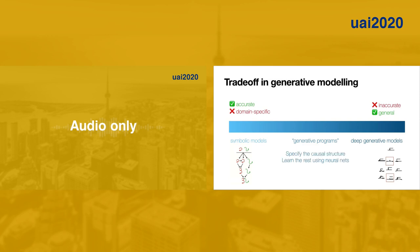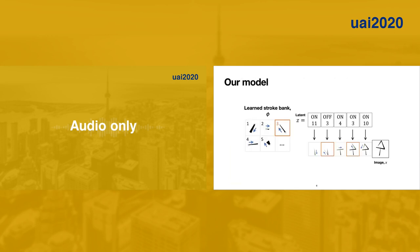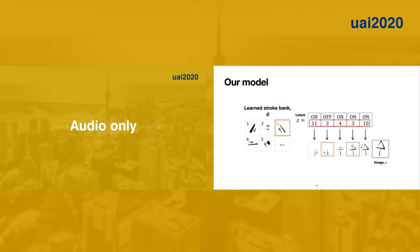In a generative program, we specify the causal structure and learn the rest using neural networks. Consider a generative program for an Omniglot character. Just like Lake et al., our model builds characters by sequentially composing strokes drawn from a finite bank of different stroke types. But unlike Lake et al., we aim to learn the stroke bank directly from the images as part of fitting our model.